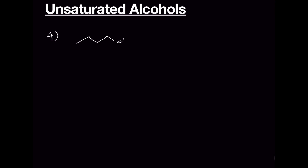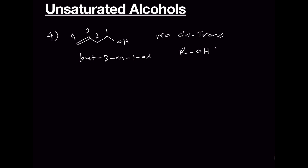Let's go to the unsaturated alcohols. We can write but-3-en-1-ol: a four-carbon chain 1-2-3-4 with the OH group at position 1. No cis-trans isomerism is possible here. Keep in mind that the alcohol functional group gets higher priority in numbering compared to the double bond.